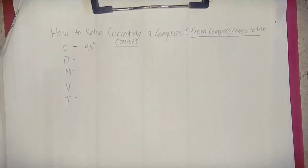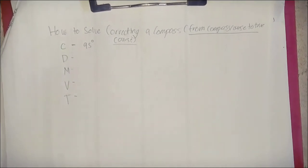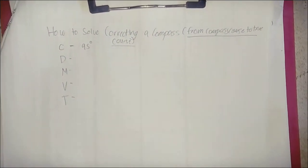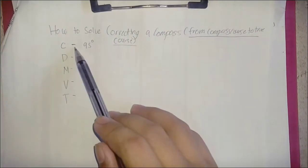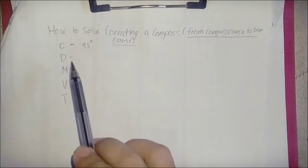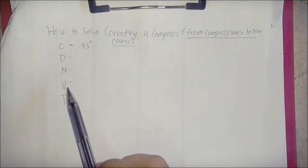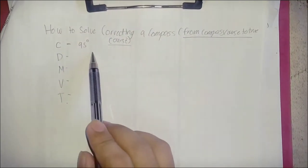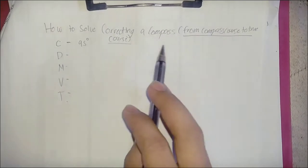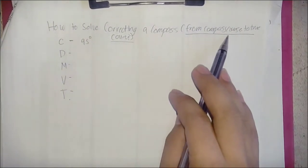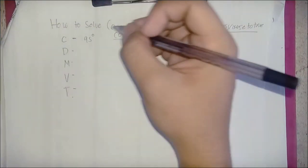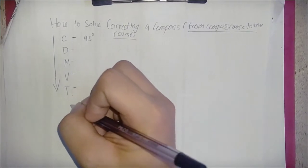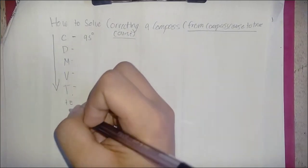I'm going to show you how to solve correcting a compass from compass course to true course. We are going to use CDMVT — compass, deviation, magnetic, variation, true. Our given compass value is 95 degrees. If we're going from compass course to true course, the arrow is going down, so we apply positive and negative signs accordingly.